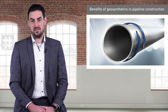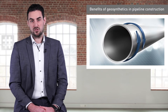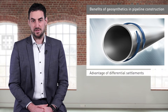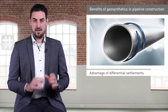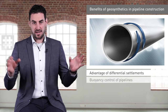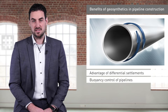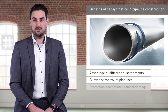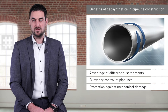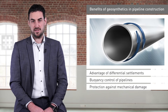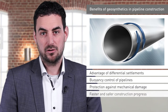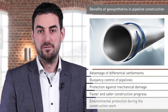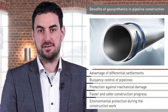In summary, the following benefits can be stated for the applications of geotextile construction materials in pipeline construction. Differential settlement can be compensated with geotextile bedding cushions. Buoyancy control can be achieved by activating the lateral soil zone with a composite cushion or with geotextile concrete mats. Pipelines can also be protected from external mechanical impacts with protective nonwovens or warning grids. All in all, with the help of geotextiles, construction works can be carried out faster and safer and the environment can also be protected during construction works.